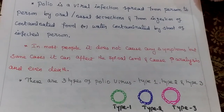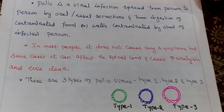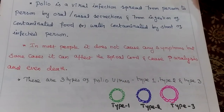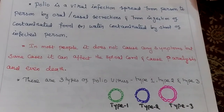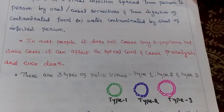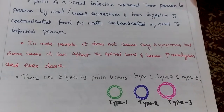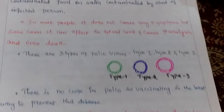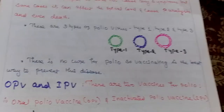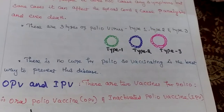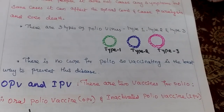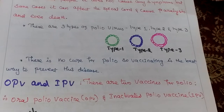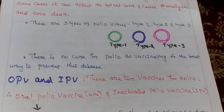In some cases, it can affect the spinal cord and cause paralysis and even death. There are three types of polio virus: type 1, type 2, and type 3. There is no cure for polio, so vaccination is the best way to prevent this disease.